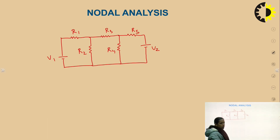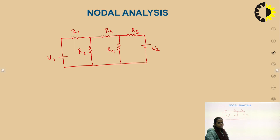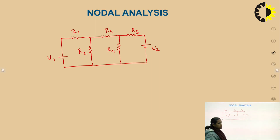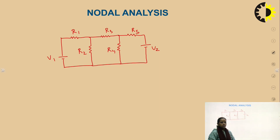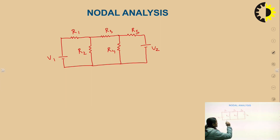Suppose if we want to solve this question by using nodal analysis and we want to find current in any branch — say current in R4 or R2 — the method we apply is nodal analysis. First, we have to identify the major nodes, or we can say the junction points. A junction point is a point where three or more branches meet.